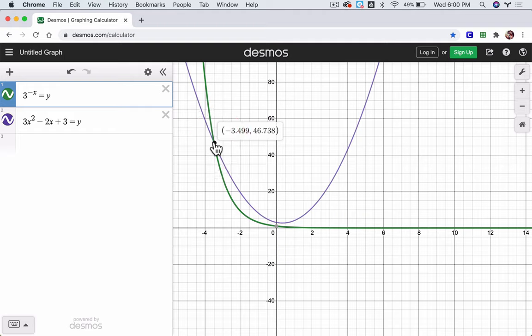We've got an answer. Negative 3.499. And that's it. Alright, I hope that helped.